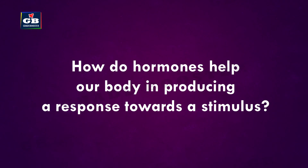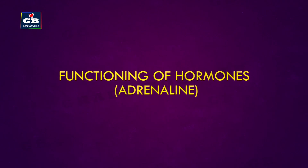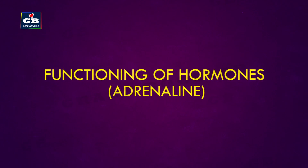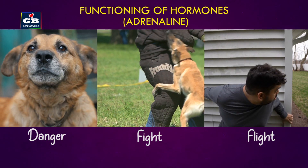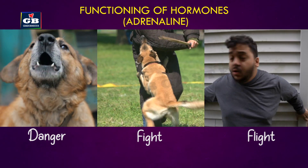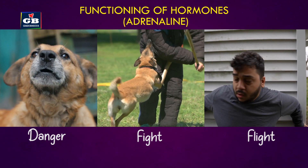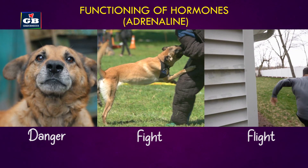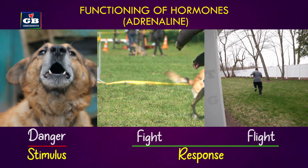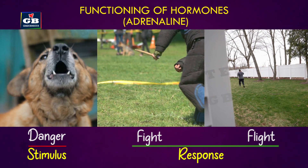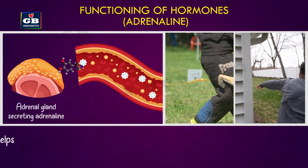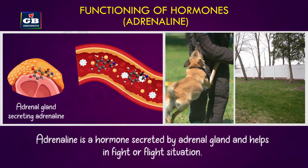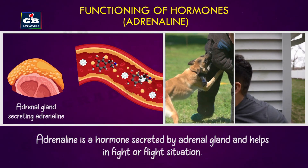Let us understand the functioning of hormones with an example. If a person is attacked by a dog, he should either fight or run away. The dog's attack is the stimulus and the man running or escaping is the response. In such a situation, a hormone called adrenaline is secreted by the adrenal glands, helping in the fight-or-flight response.